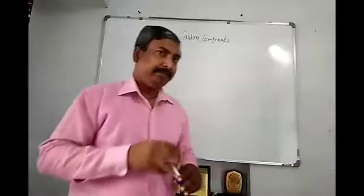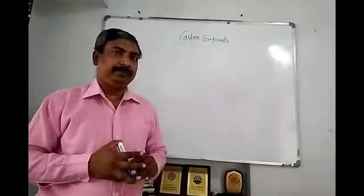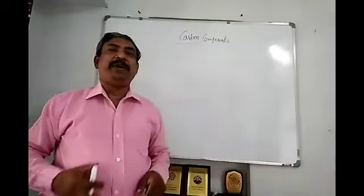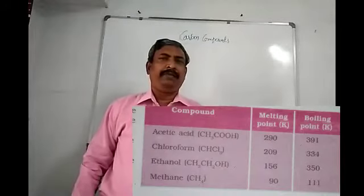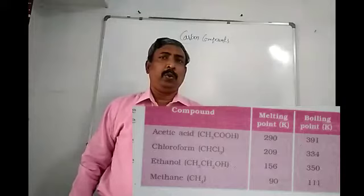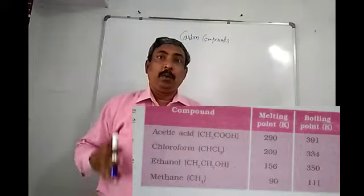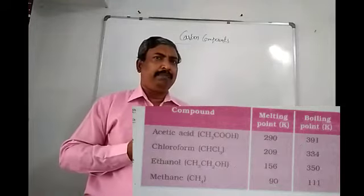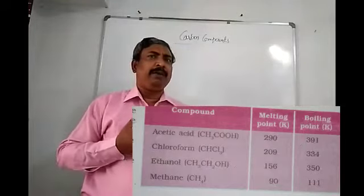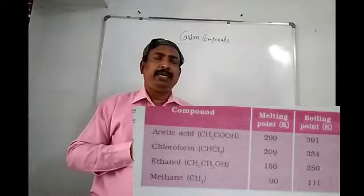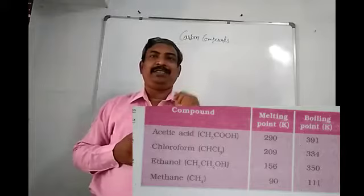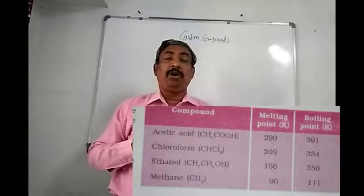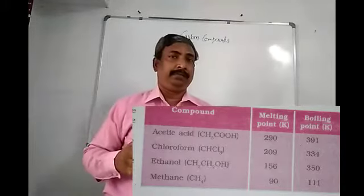Now look at this table. The melting points and boiling points of carbon compounds are very, very low. Why do these carbon compounds have low melting points and boiling points? Because the bonds between them are very weak.